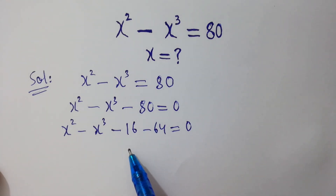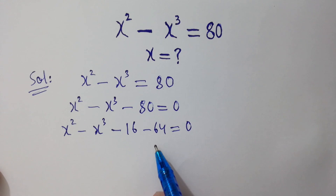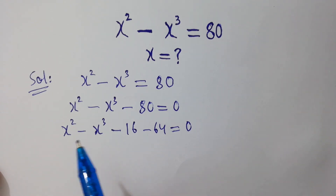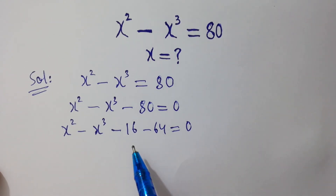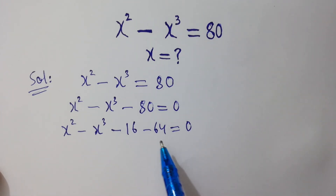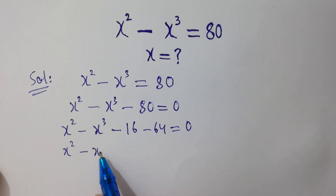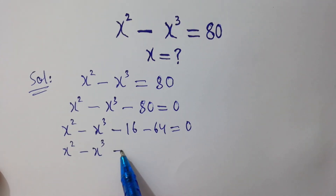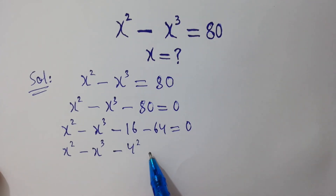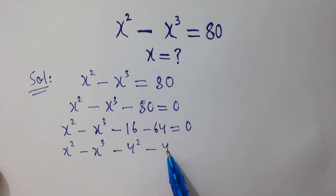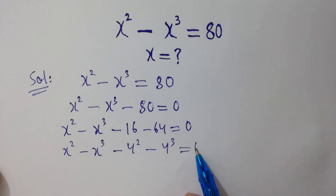We use 16 and 64 because there is x squared, and 16 is 4 squared; there is x cubed, and 64 is 4 cubed. So the equation becomes x squared minus x cubed minus 4 squared plus 4 cubed, wait: x squared minus 4 squared, minus x cubed plus 4 cubed, equals 0.